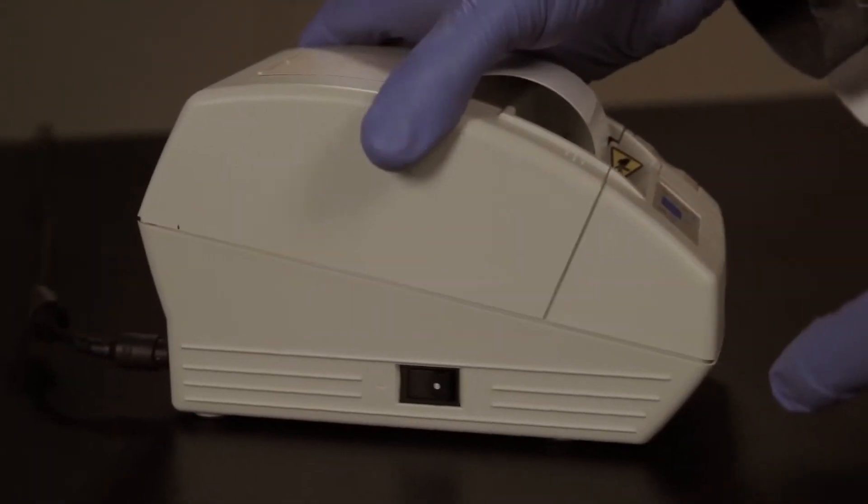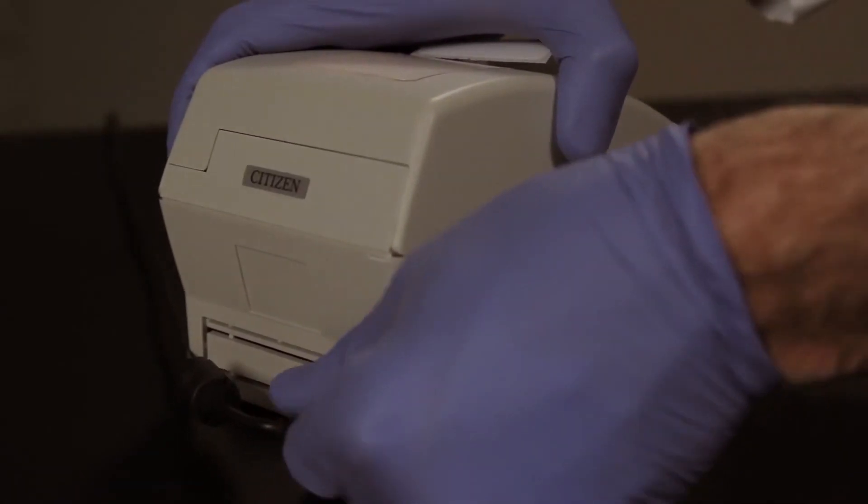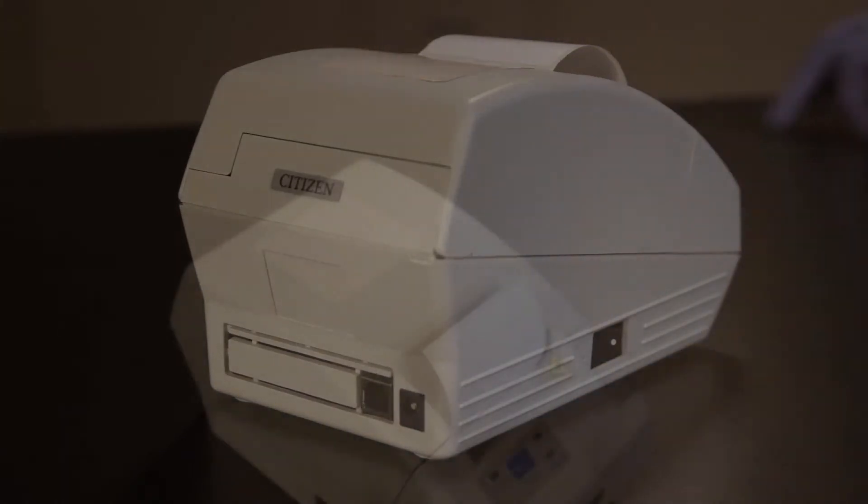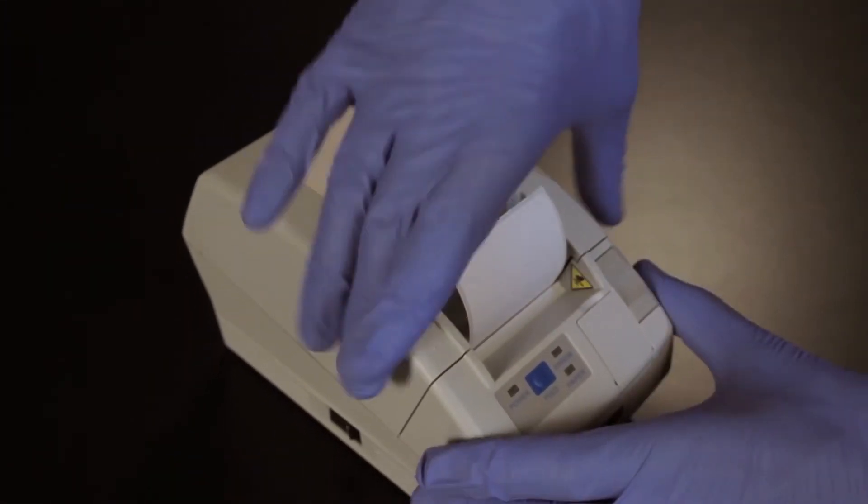First, turn your printer off and disconnect the power supply. Next, open the printer casing to remove the paper roll to reveal the print head.